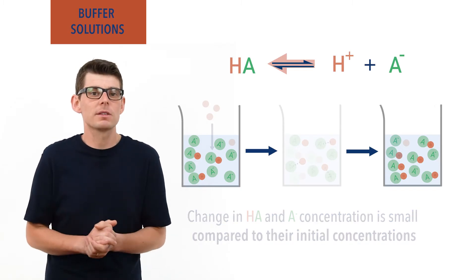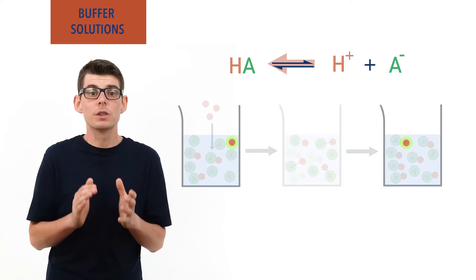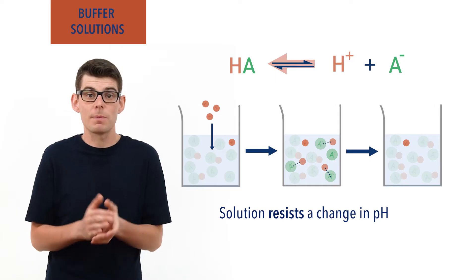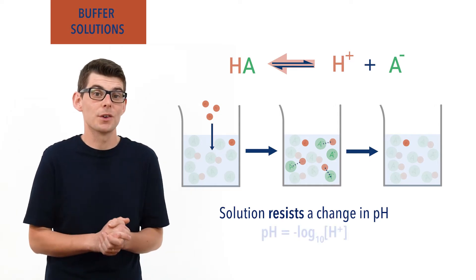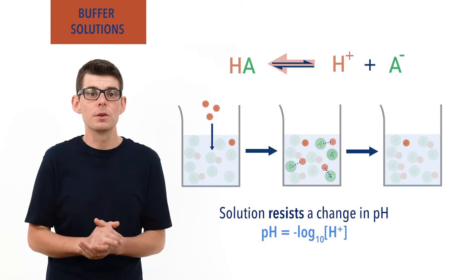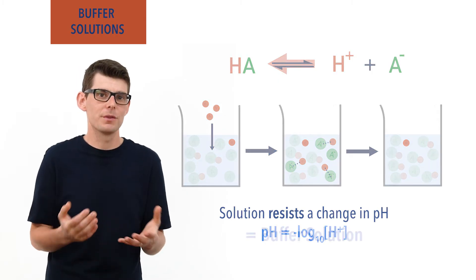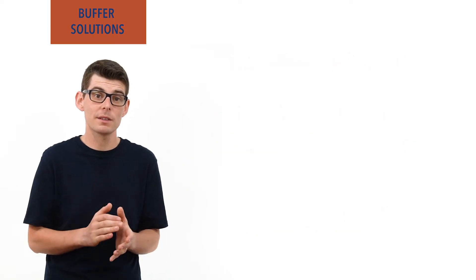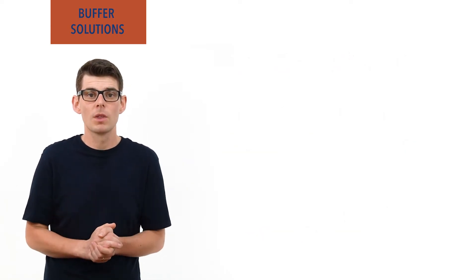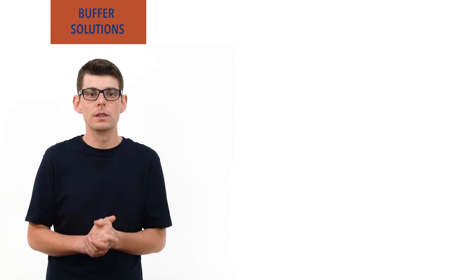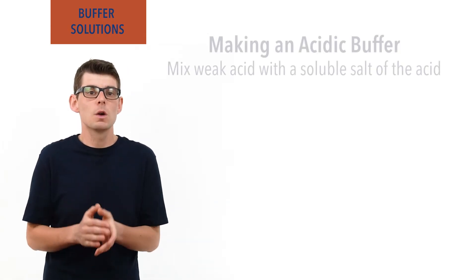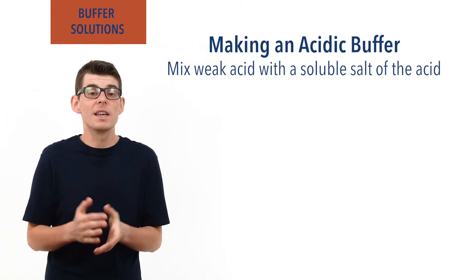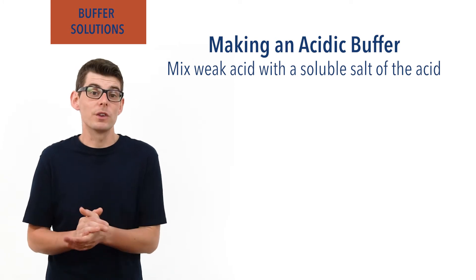By keeping H⁺ ion concentration nearly constant, the solution minimizes or resists a change to its pH, as pH is based on H⁺ ion concentration. We describe solutions that can do this as buffers. To make an acidic buffer solution, we need to mix molecules of a weak acid and ions of its conjugate base. We can do this in two ways. First, you can mix a weak acid with a soluble salt of the acid — a common example is ethanoic acid and its salt sodium ethanoate.